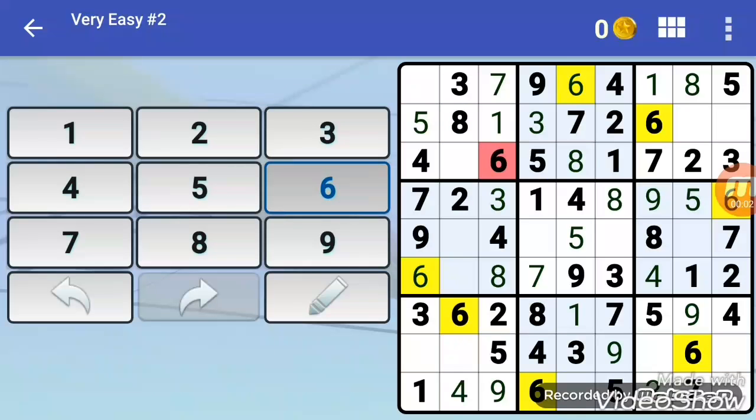Step 7. By doing simple cross-hatching, you will fill in several squares. Once you have gone through all the boxes, return to the first box and repeat the process, as it is likely there are now more available solutions.